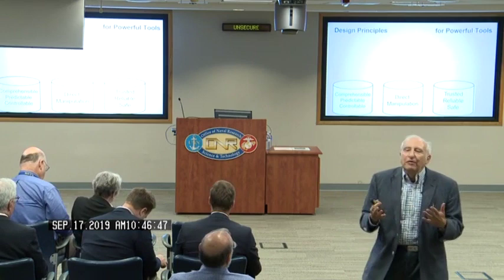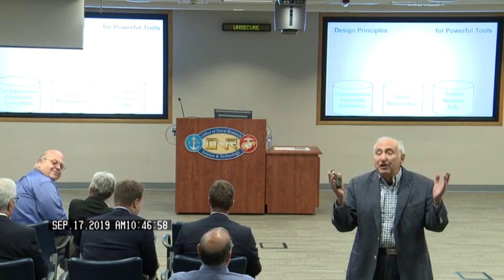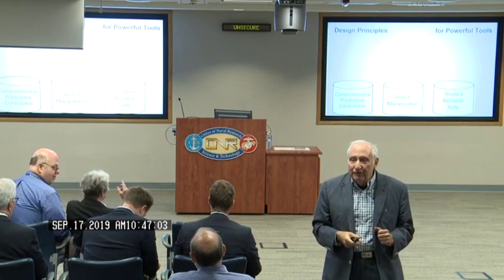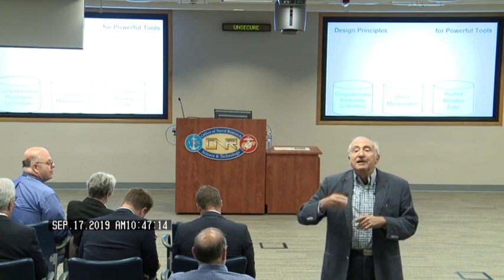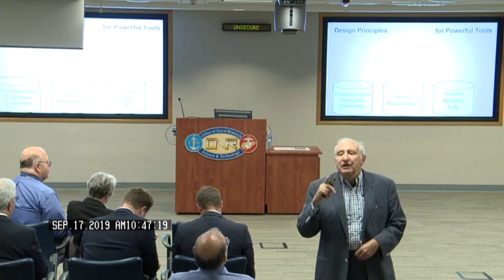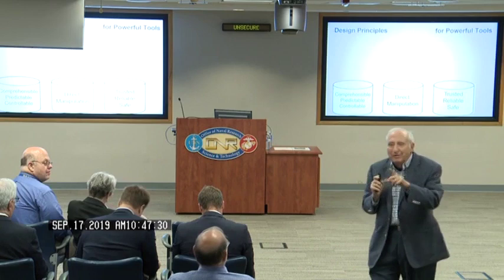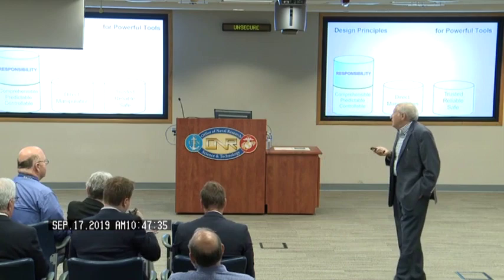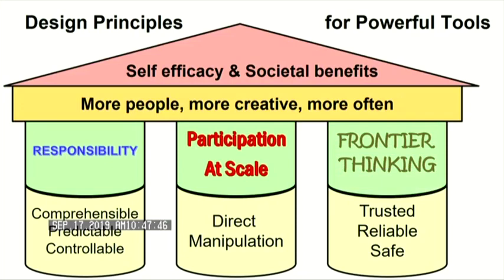Systems have to be over-engineered — elevators had multiple forms of original failures where they would drop in the shaft, so you build in multiple forms of braking. The San Francisco cable cars have three forms of braking. The three remaining pillars of this talk are: responsibility, social context, and frontier thinking. The goal is to make more people more creative more often, with self-efficacy and societal benefit. On responsibility and accountability, the current language includes accountability, liability, fairness, transparency, explainability, and interpretability — all good words, with a huge upsurge of research on this topic in the last nine to twelve months.